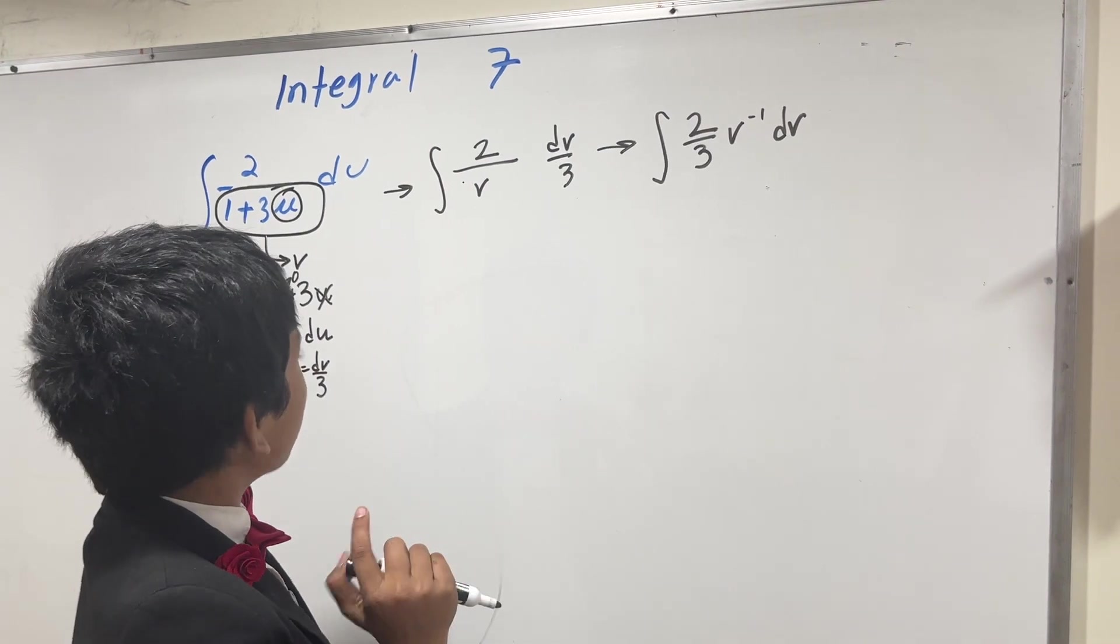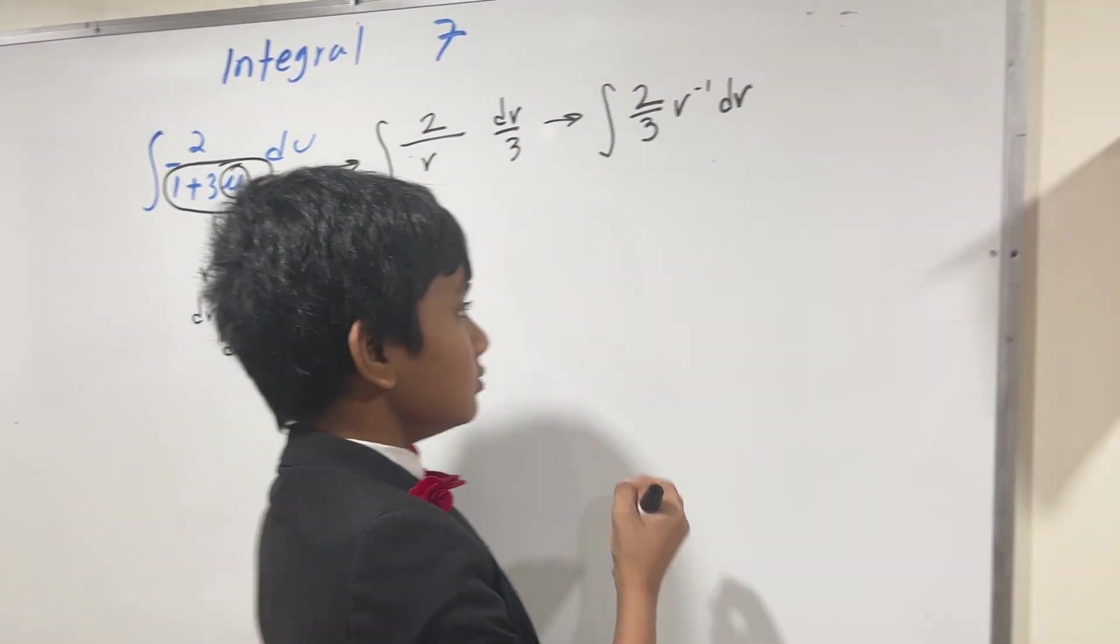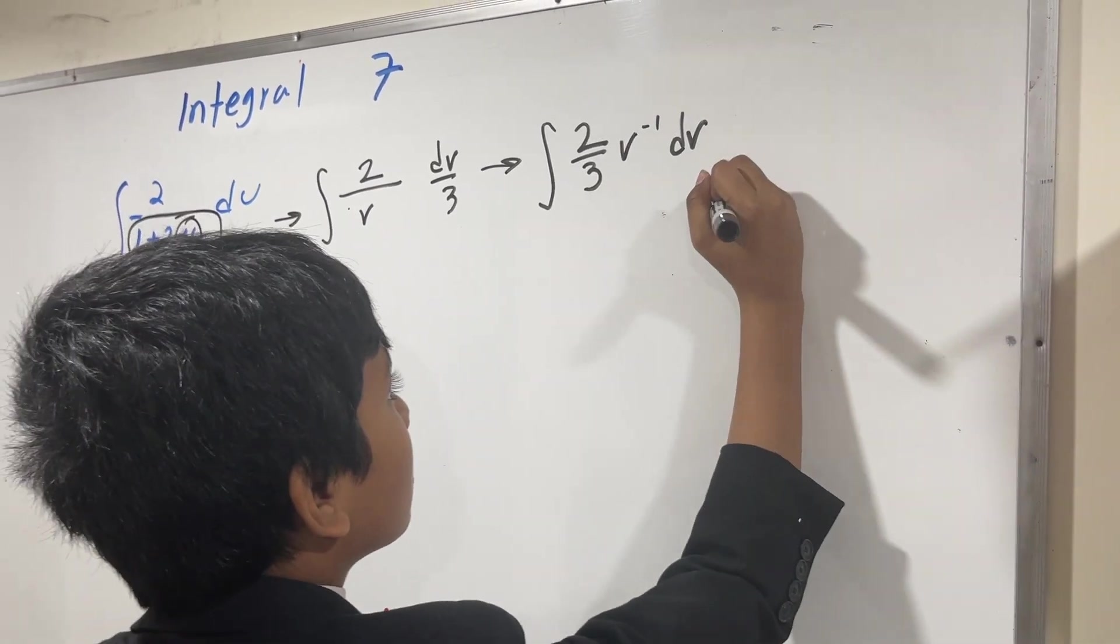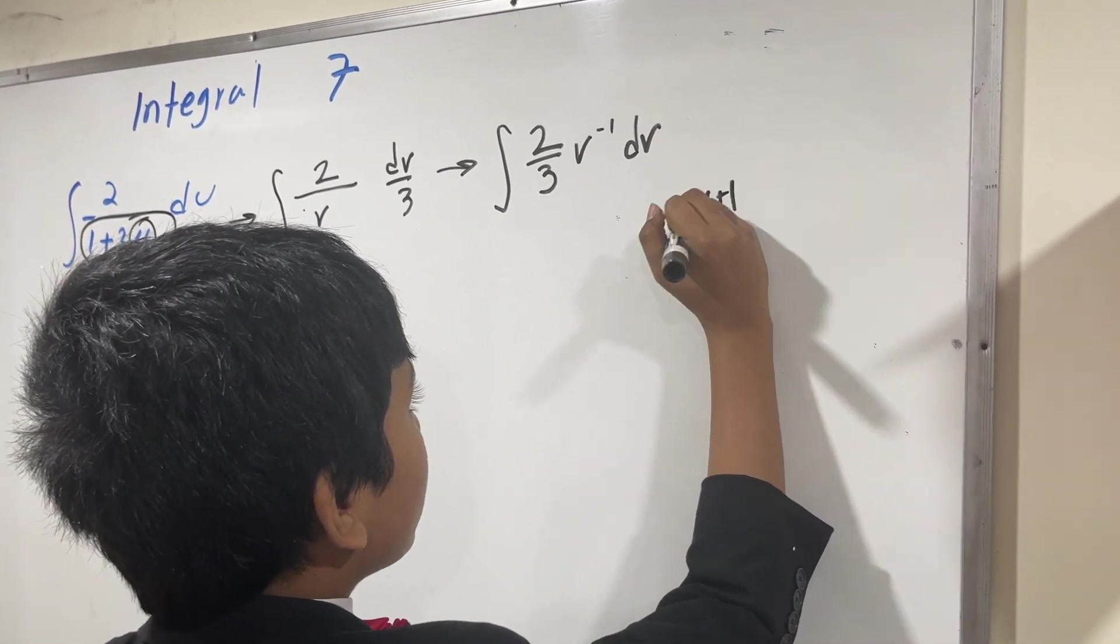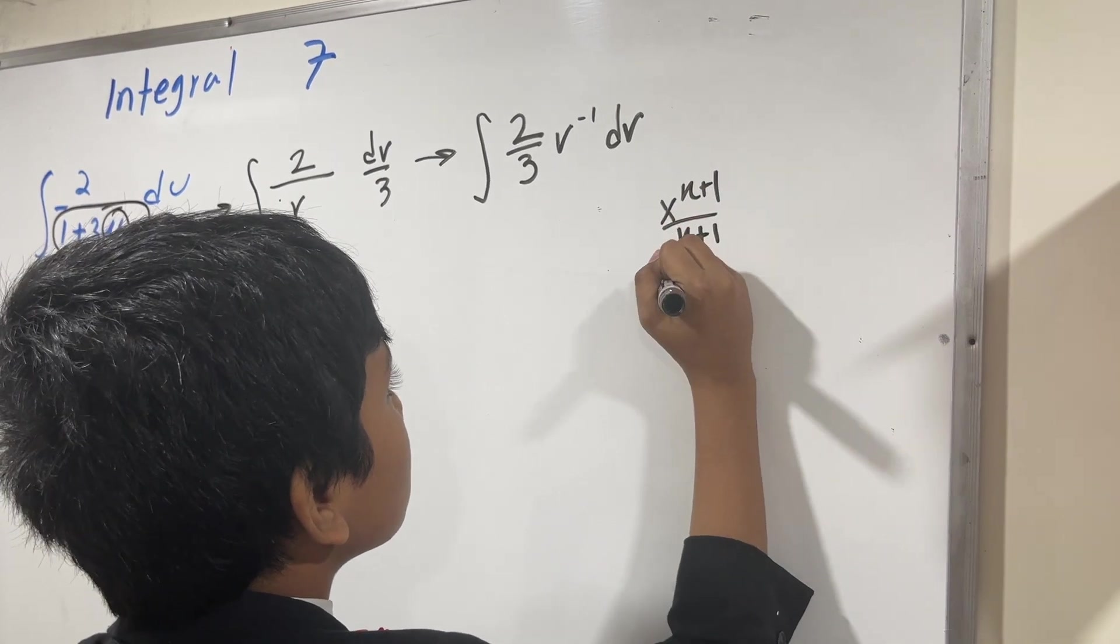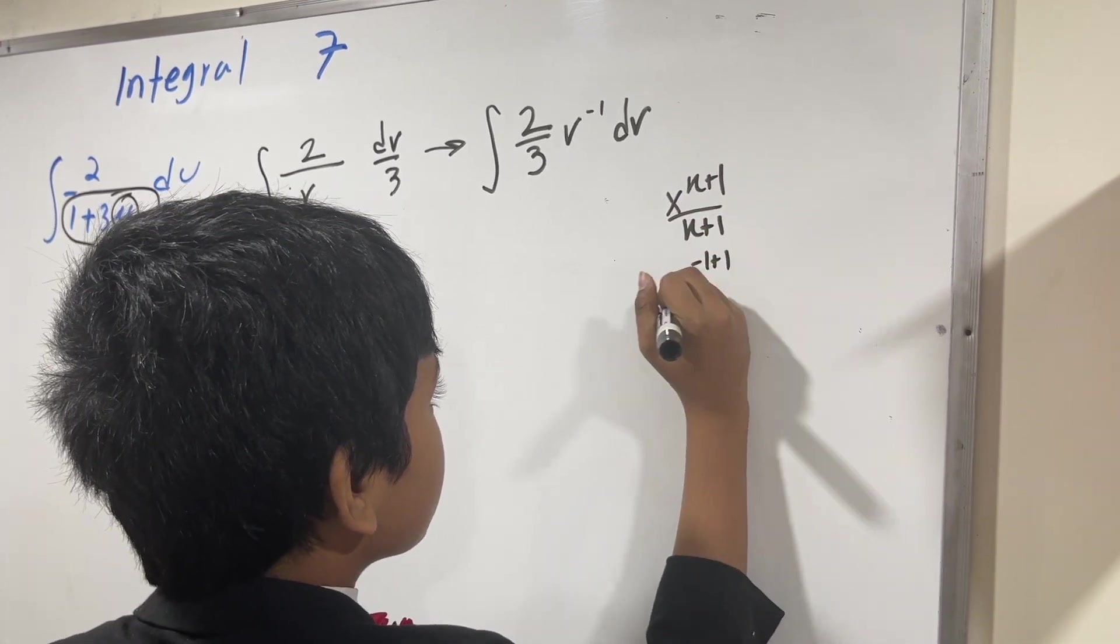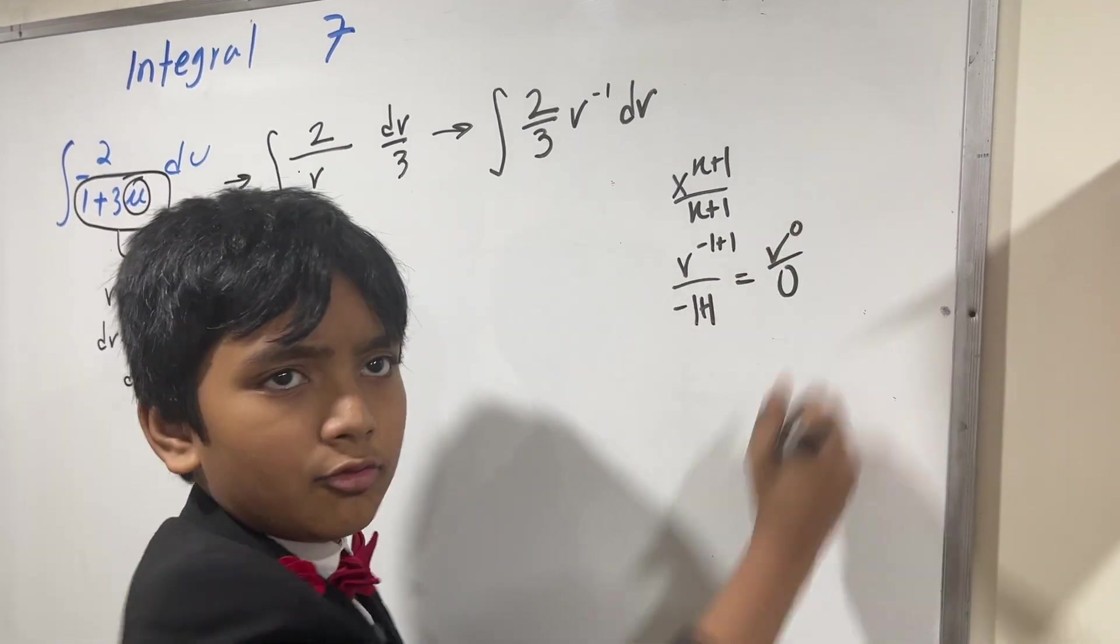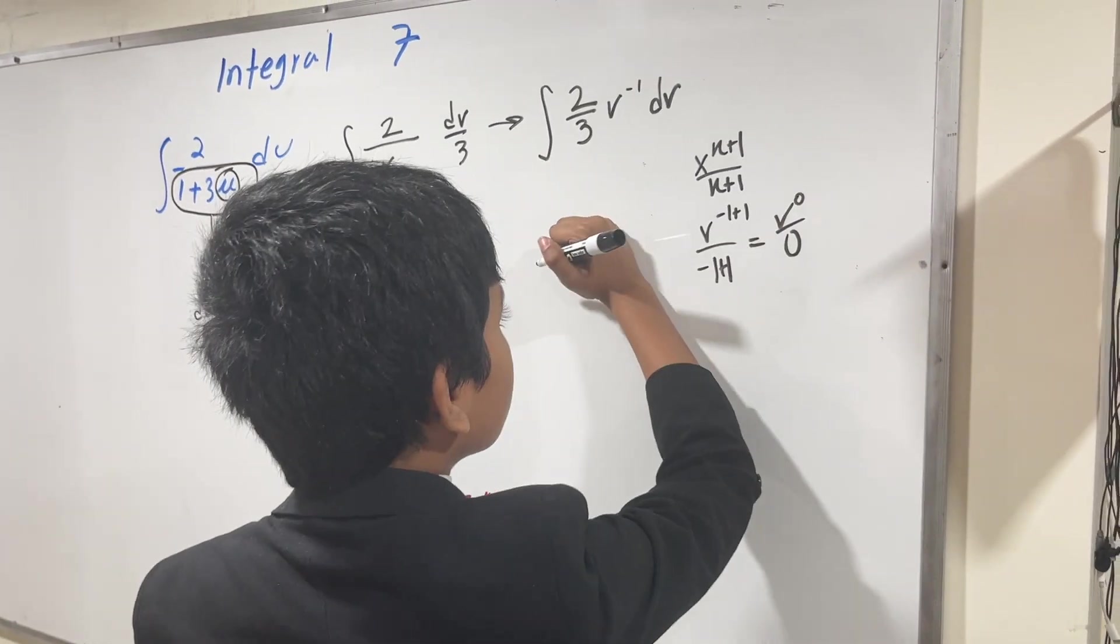But wait a dang second. What happens if we try to use our reverse power rule here? Doing x to the n plus 1 over n plus 1 rule, we get v to the minus 1 plus 1 over minus 1 plus 1, which doesn't work. So what do we do instead?